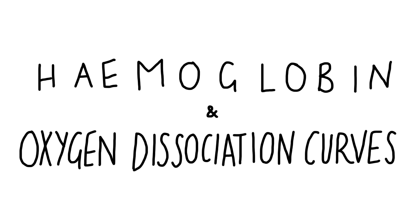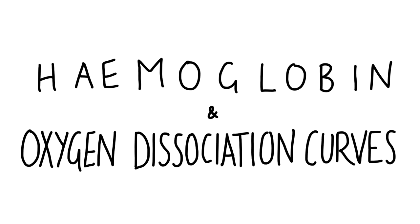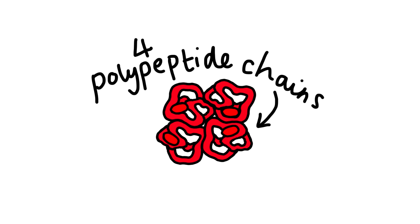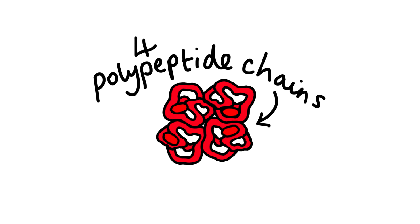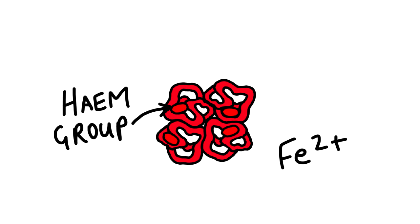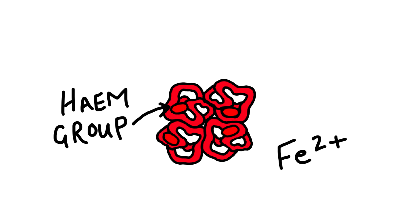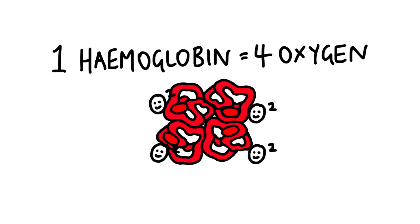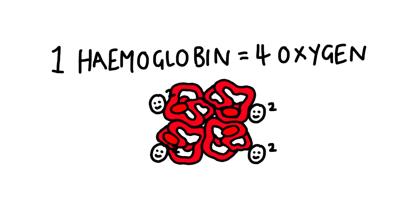Hemoglobin and oxygen dissociation curves. Hemoglobin is a large protein made up of four polypeptide chains, so it's described as having a quaternary structure. Each polypeptide chain has a heme group containing iron. Each polypeptide chain binds to one oxygen molecule, so one hemoglobin protein can carry a total of four oxygen molecules at once.